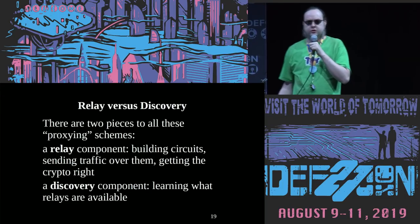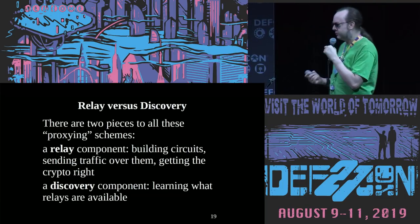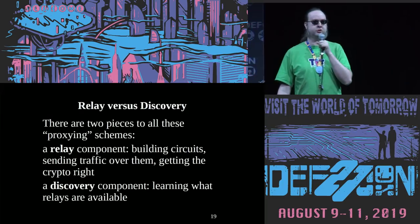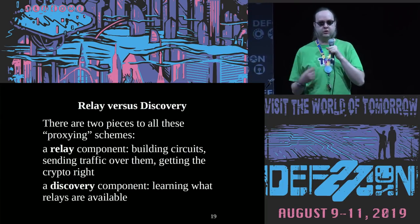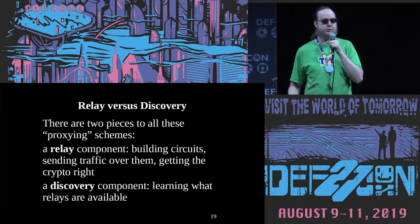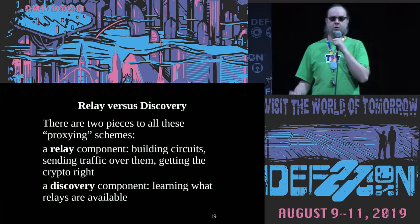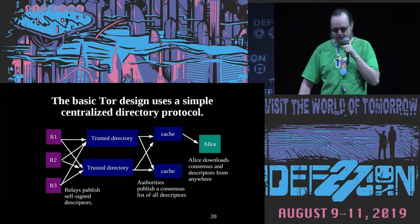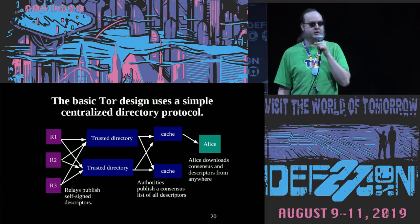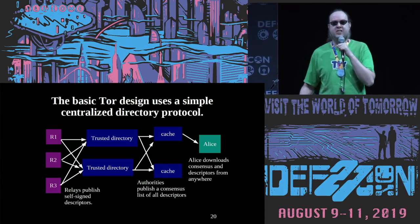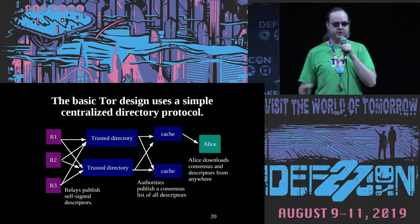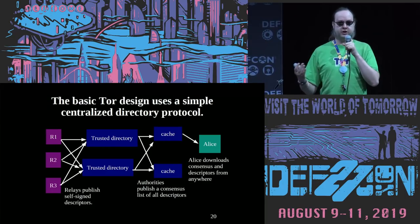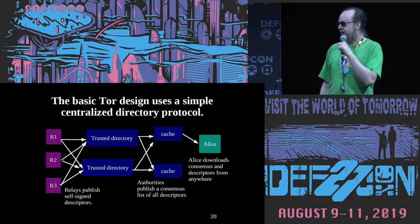When you're trying to think about a censorship resistance tool, there are really two pieces to it. The first piece is the relaying component — the encryption, how you build the paths. The second piece is the discovery component — where do you learn the addresses or proxies, how do you learn how to connect into the network in a way that gives you an address that somebody else hasn't blocked already? The simple version from the Tor side is we have a centralized set of directory authorities — they build a list of all the relays and then all the clients fetch that list. That's great, it's simple, but it's not good from a censorship side because you, the adversary, get the list of all the public relays and you block them, and that's the end of it.